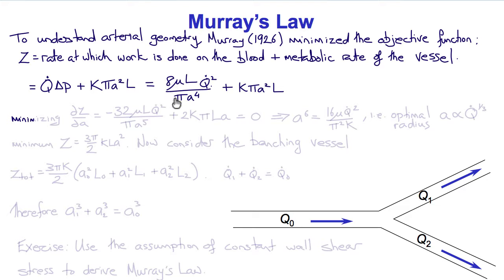So then substituting for the pressure gradient from Poiseuille's law, we would get that Z is 8 mu L Q dot squared divided by pi A to the fourth plus K pi A squared L. And minimizing this function Z by setting its derivative with respect to the radius equal to zero, we would say minus 32 mu L Q squared over pi A to the fifth plus 2 K pi L A is equal to zero, which we can rearrange in terms of A to get that A to the sixth equals 16 mu Q dot squared divided by pi squared K. Or in other words, the optimal radius A is proportional to the cube root of the flow.